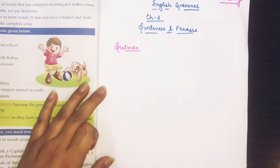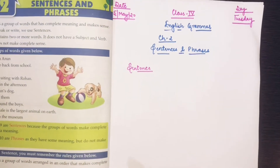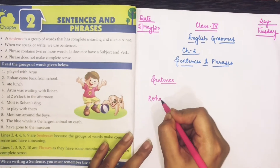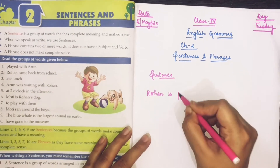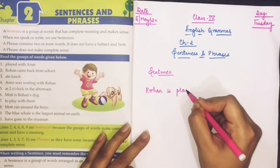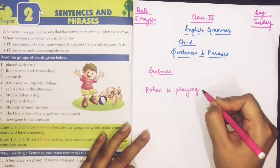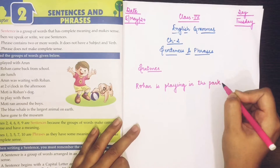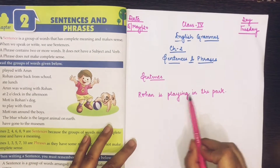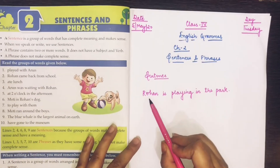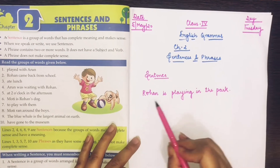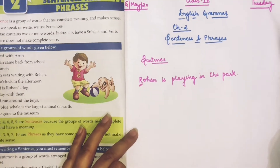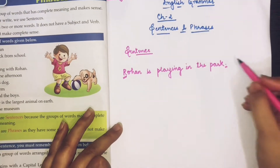A group of words which makes a meaningful sense — like 'Rohan is playing in the park.' You see, these are a group of words making sense. It begins with a capital letter and it ends with a full stop. Therefore, this is a sentence.